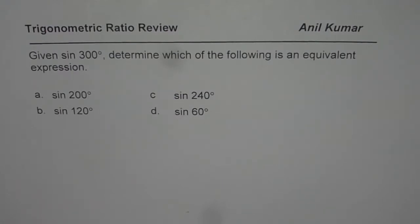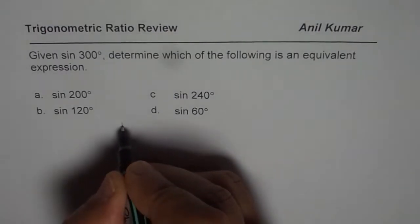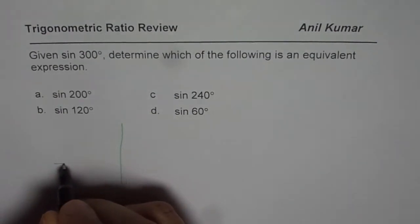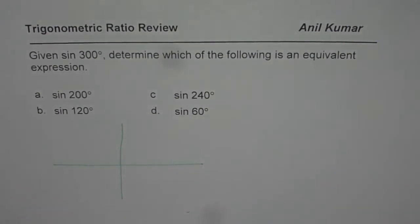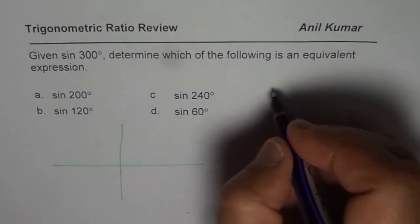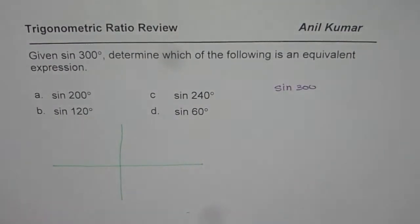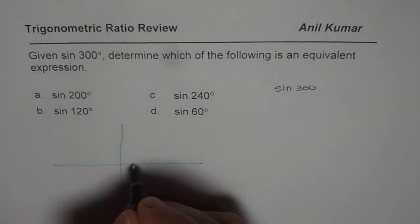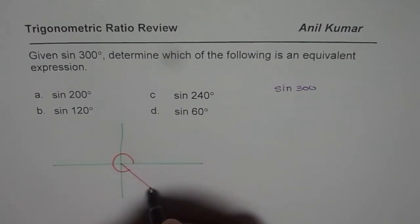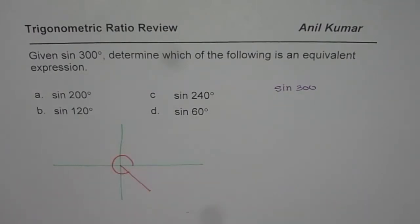Now how to answer such questions? We should see what is the related acute angle to figure out what is the equivalent ratio. So when we say sine of 300, sine of 300 means that the principal angle is 300, so you are in quadrant 4. That is what it is. So that is 300 degrees.